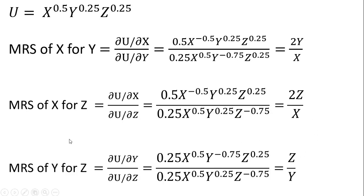One last marginal rate of substitution — the marginal rate of substitution of y for z. You can see the partial derivative of the utility function with respect to y divided by the partial derivative of the utility function with respect to z. So in the numerator, we take the partial derivative of y. The 0.25 on the y term gets brought down in front. We don't do anything with the x term. We subtract 1 from the exponent on y, which simplifies to y raised to the minus 0.75. We don't do anything with the z term. Then we take the partial derivative with respect to z, and we get our prior result.